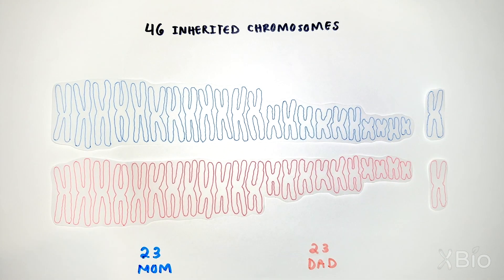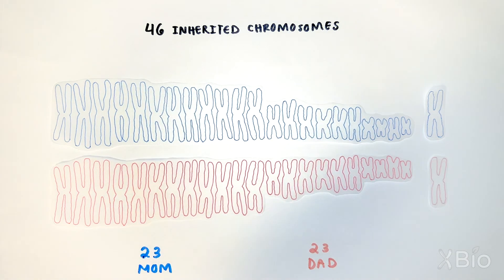Thus, most of your genes come in duplicates, a copy from mom and a copy from dad. If you accidentally inherit one too little or one too many chromosomes, consequences can be severe. For example, Down syndrome occurs when you have three instead of two copies of chromosome 21.